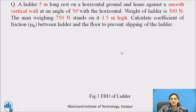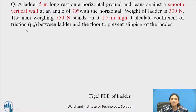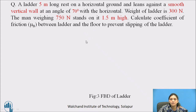Now we will solve a numerical on ladder. A ladder of 5 meters long rests on horizontal ground and leans against a smooth vertical wall at an angle of 70 degrees with the horizontal. The weight of the ladder is 300 Newton and a man weighing 750 Newton stands on it 1.5 meters high. Calculate the coefficient of friction mu_b between the ladder and the floor to prevent slipping.